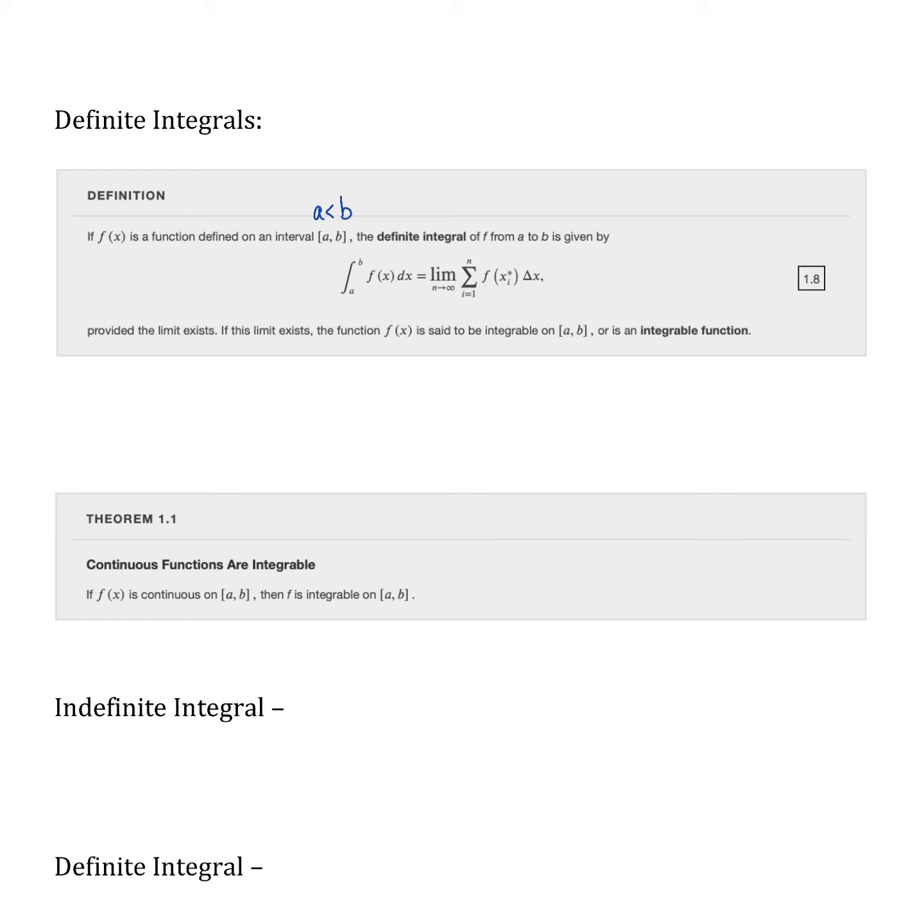The definite integral from a to b is given by this integral symbol, which is a long, elongated s—a shorthand notation for a summation. On that integral we've got the a to b, so our interval is represented there, of our function f(x) dx. This equals the limit as n goes to infinity of a sum starting at 1 going to n. We're making n bigger and bigger, and this sum is any of our various Riemann sums.